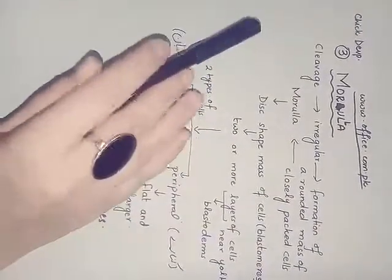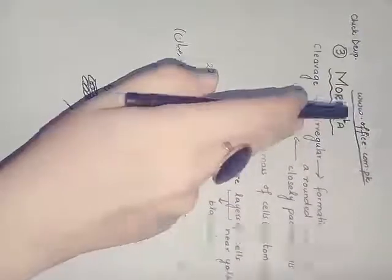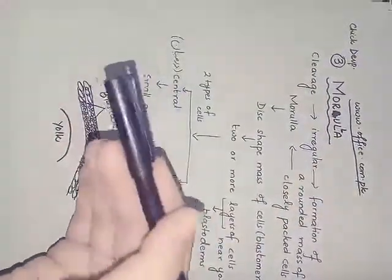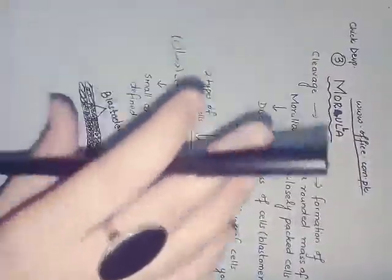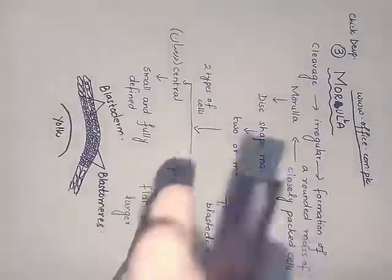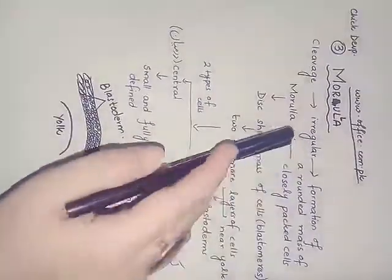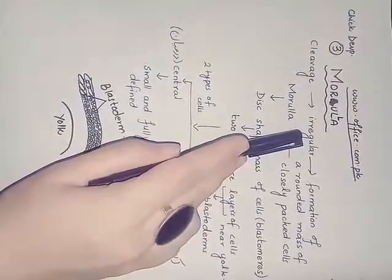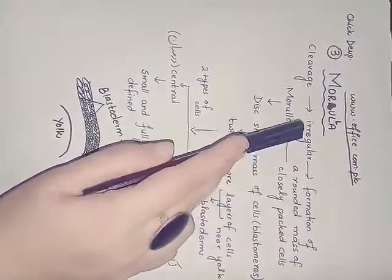The next stage in the development of a chick embryo is the morula stage. Once cleavage starts, the divisions are regular, but with successive mitosis, the divisions become irregular with no regularity in the division of cells.